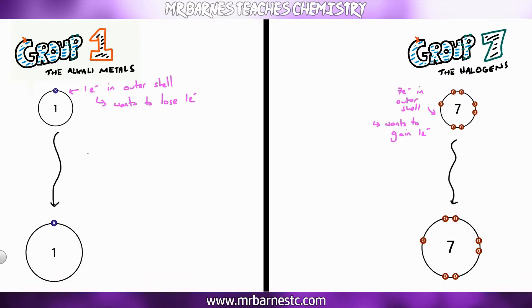Now as we go down the groups the atomic radius increases so the size of the atom. That means there are more shells with more electrons so you get something called electron shielding. So as you go down the group there is more electron shielding.